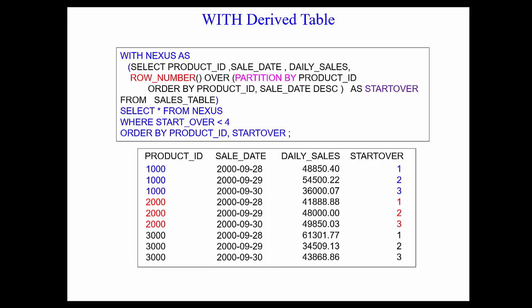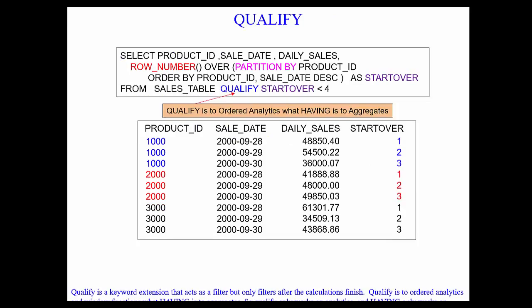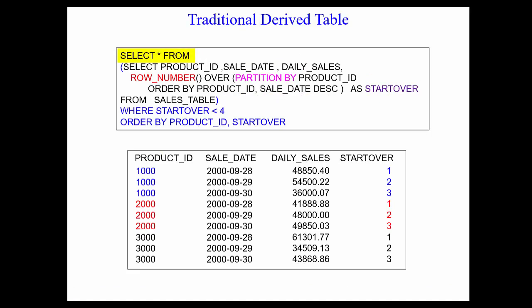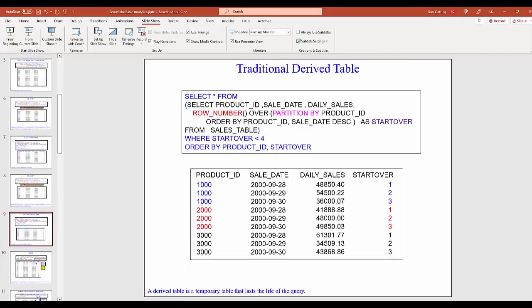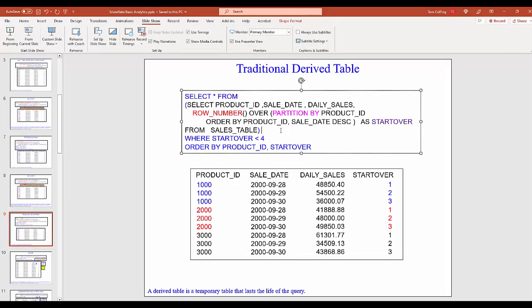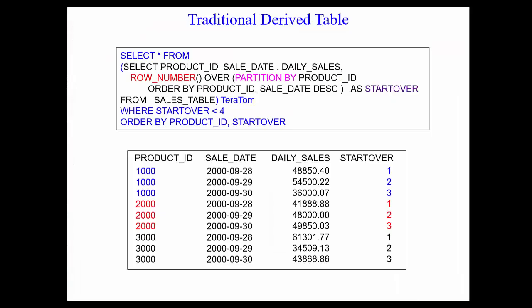Here's another version you're probably more familiar with. Once again, this was our QUALIFY start_over less than 4. But if we can't use QUALIFY, I'm going to change this by running the query, putting it in a derived table. I'll say SELECT everything FROM, open paren, close paren, and then give it a name. I'm going to call this Teratom. And then it comes back and says WHERE start_over less than 4, ORDER BY product ID and sale date. Each derived table requires two SELECT statements — one from your query and another to reference the derived table. You give the derived table a name, and now that WHERE clause is going to work.